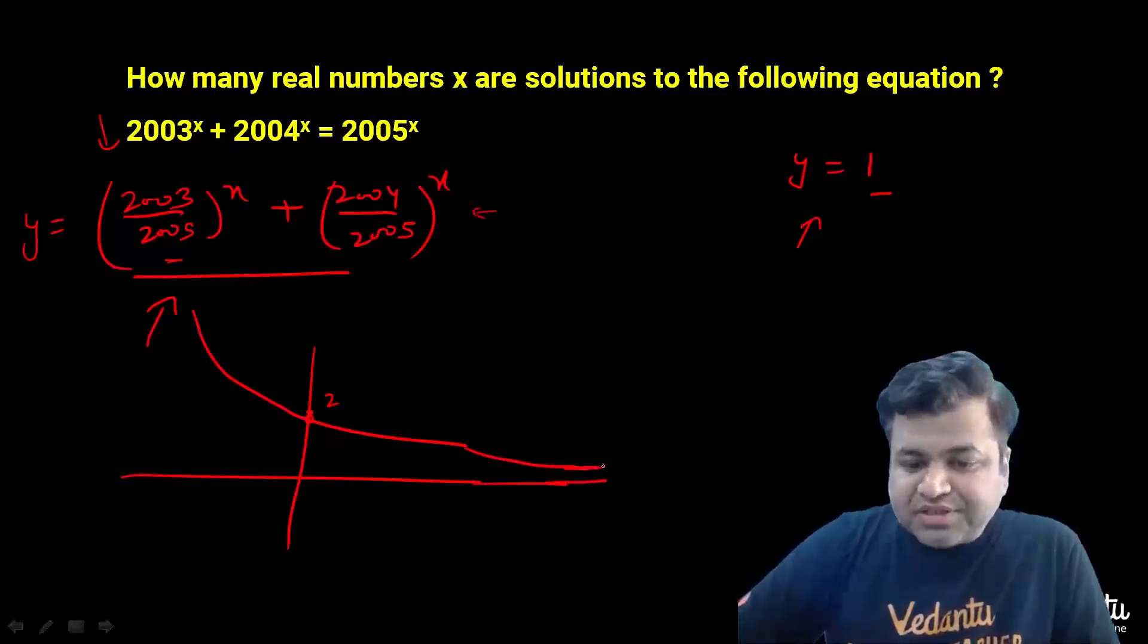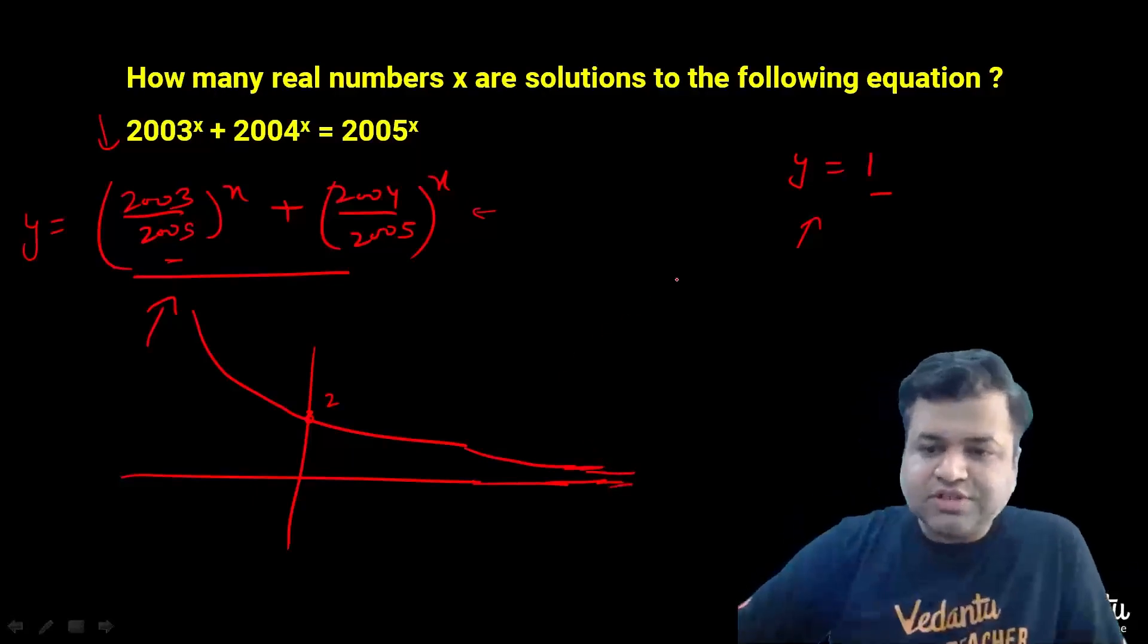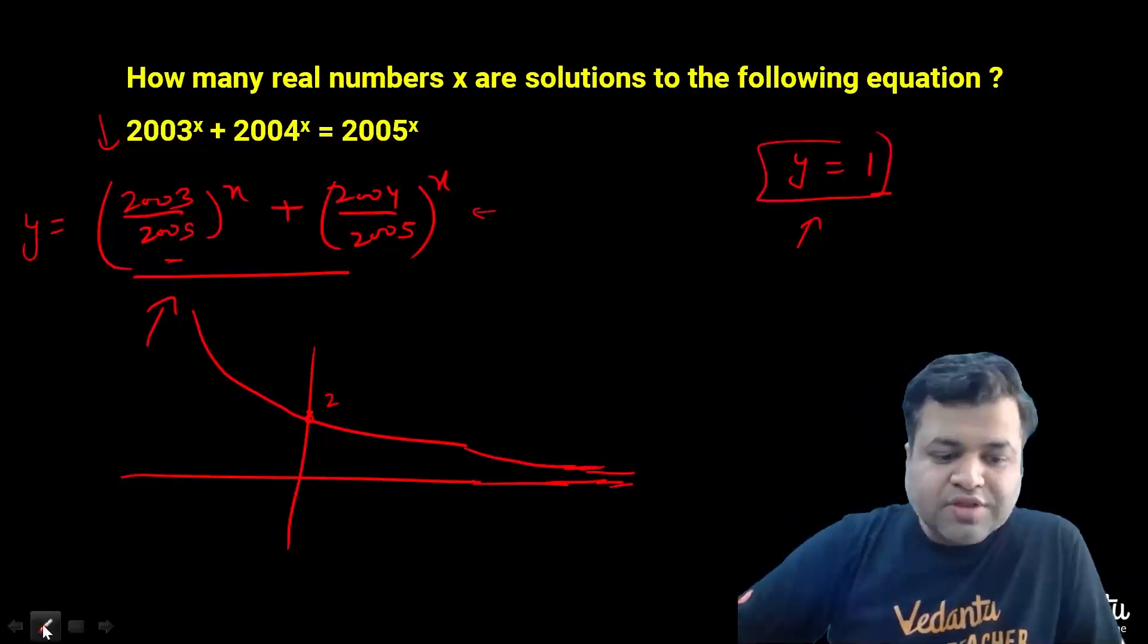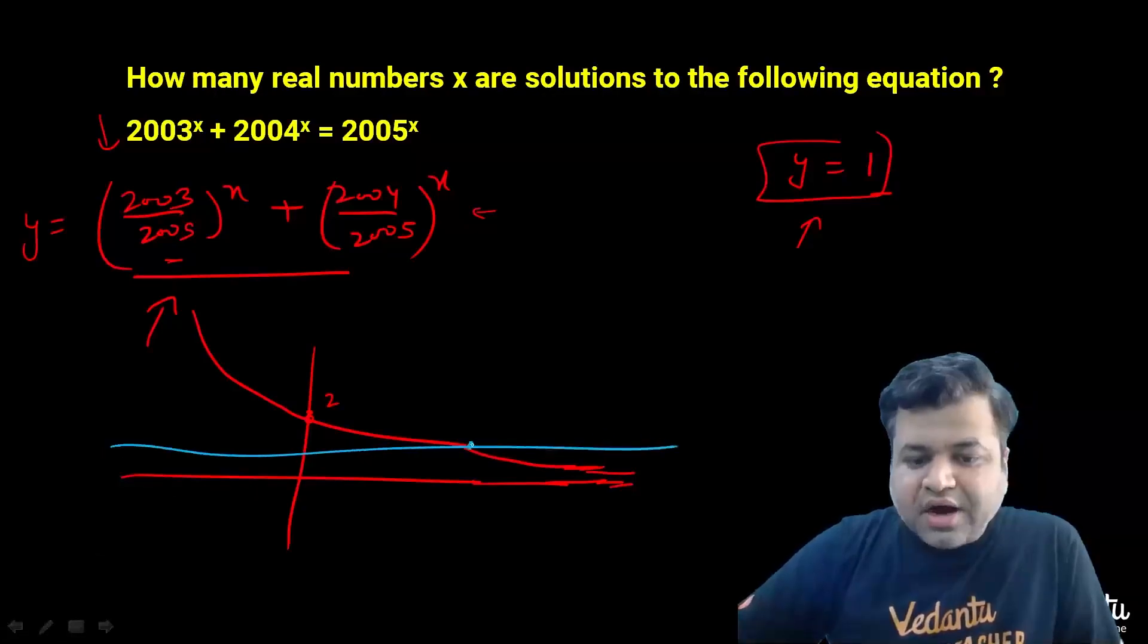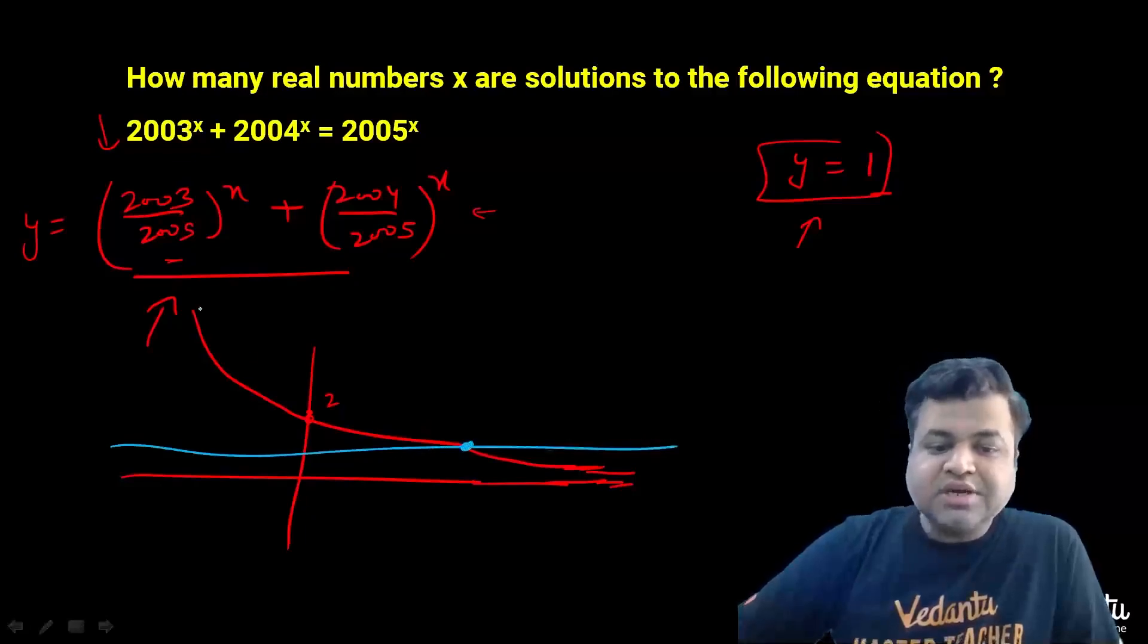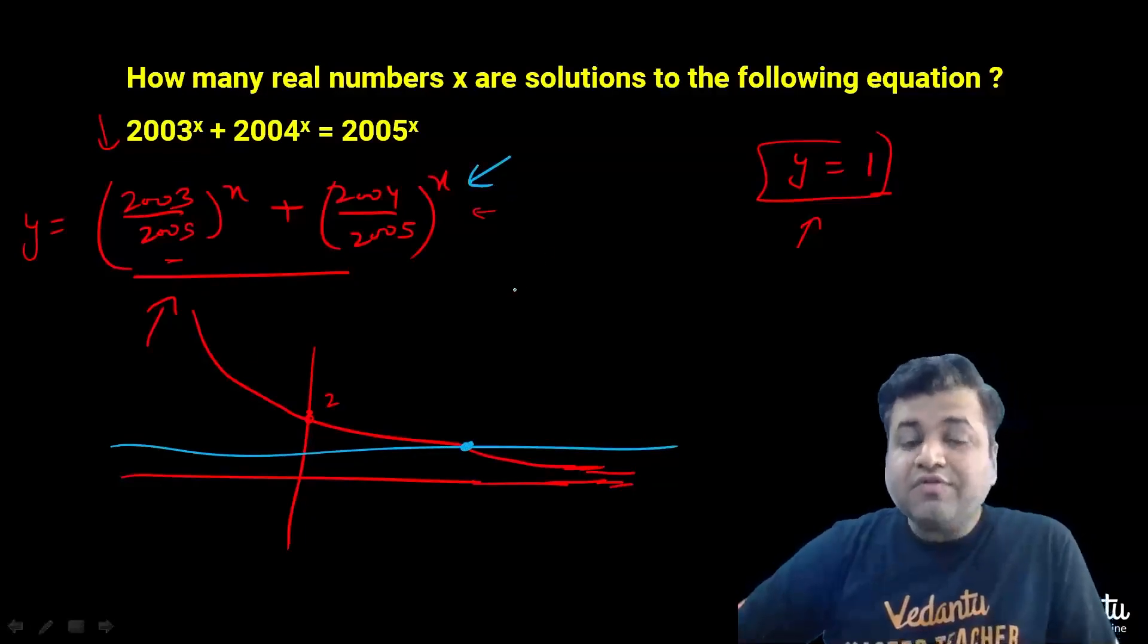This graph will try to touch the x-axis as x approaches infinity, whereas y equals 1 is clearly a horizontal line like this. Clearly the graphs will intersect at only one point.